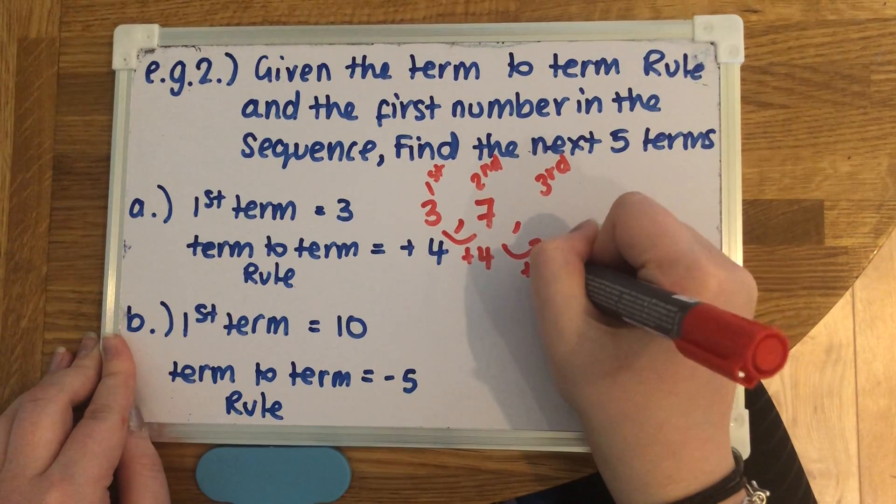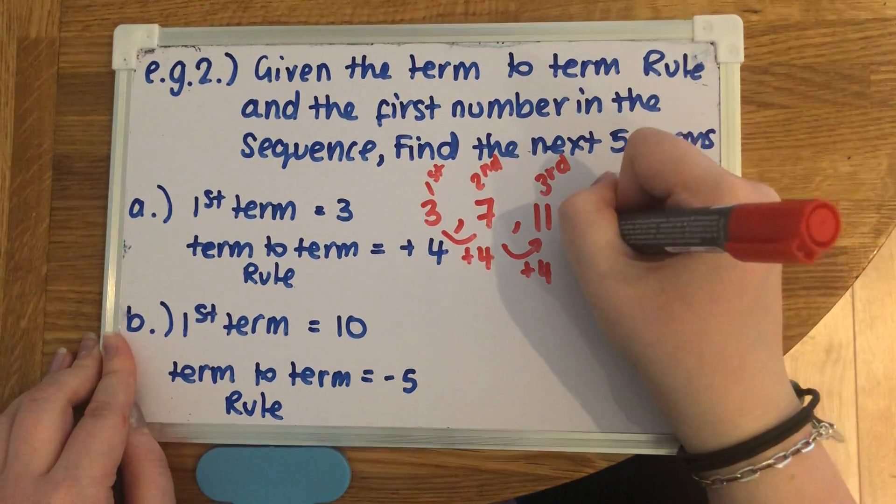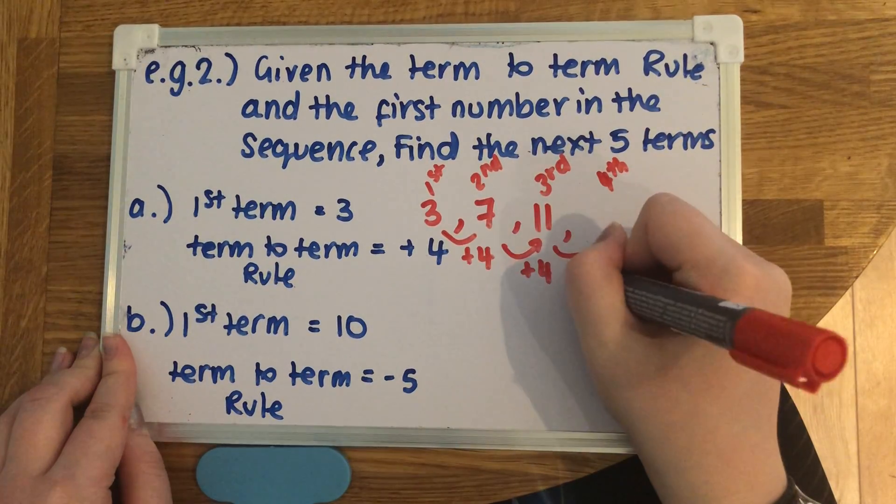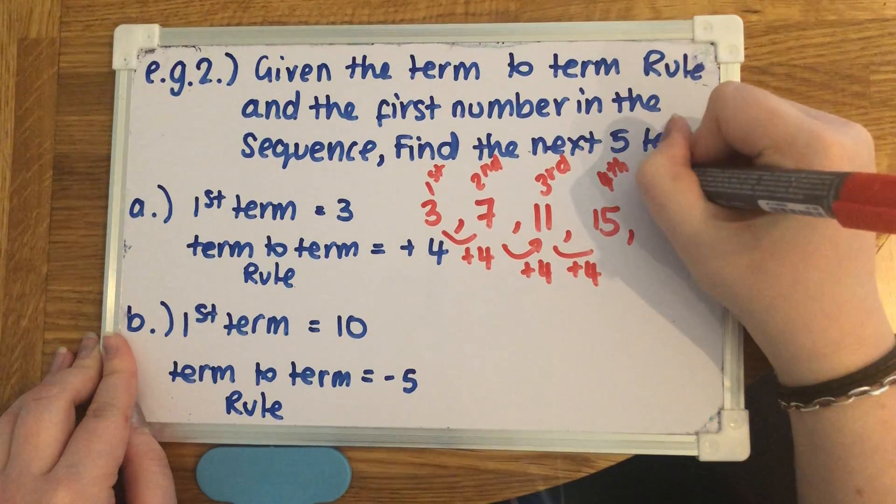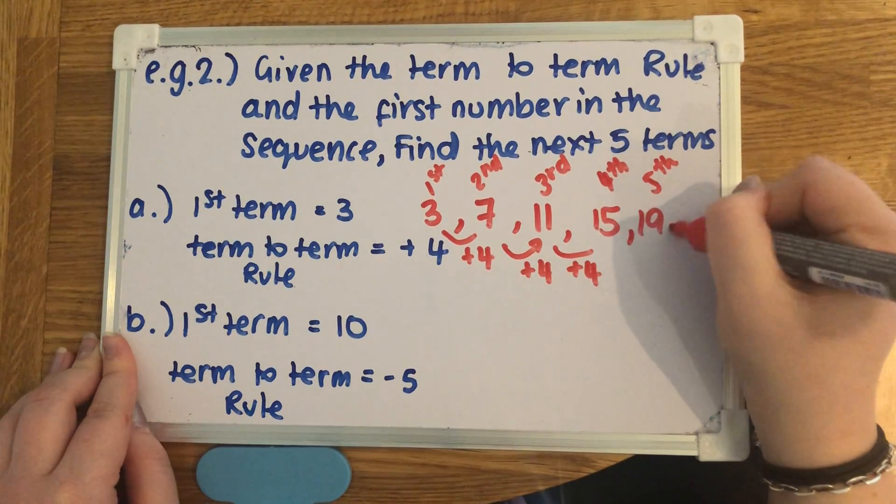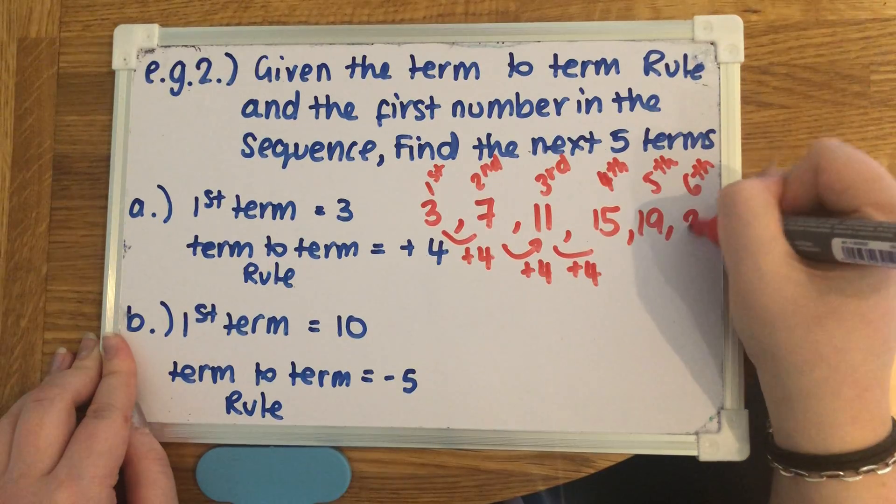To get the third, we would add 4 onto the 7, so 4 add 7 gives us 11. Then we need to find the next one, so we need to find the fourth. Again, just keep adding 4, so 11 add 4 is 15. Then we need the fifth, which would be 15 add 4, 19, and the sixth, 23.